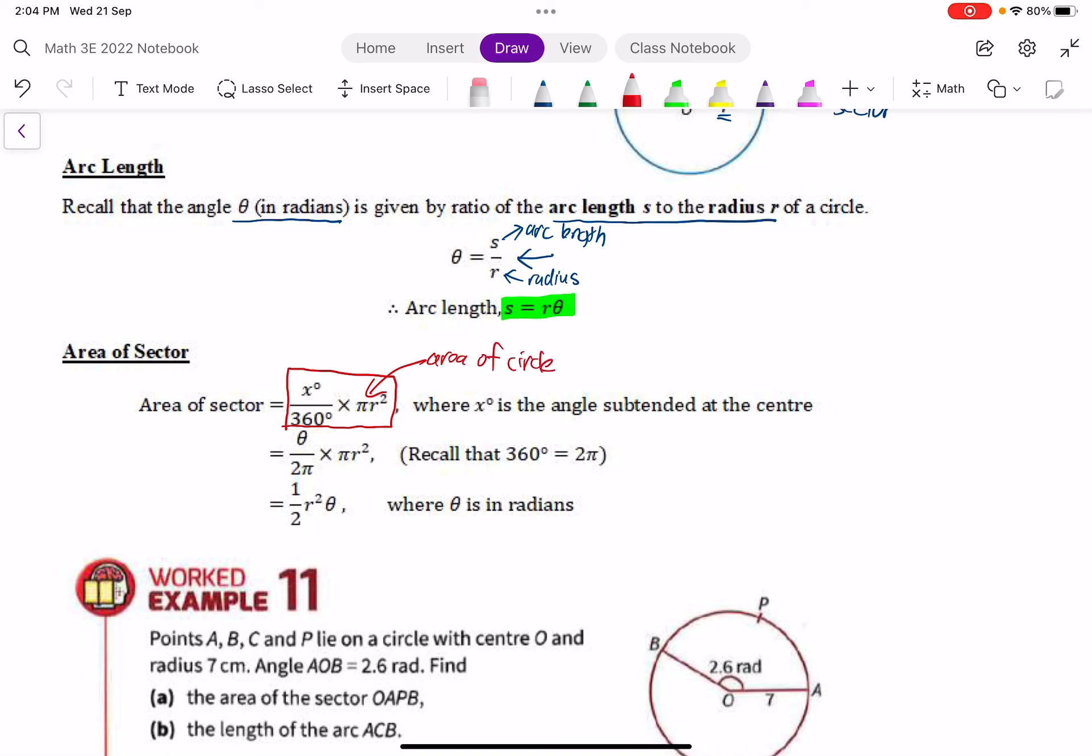Now what I want to do is change the degree to radian, so now theta is in radian. For 360 degrees, 360 degrees is actually 2 pi. Can you recall this? 360 degrees is 2 pi, and that's why I changed 360 degrees to 2 pi.